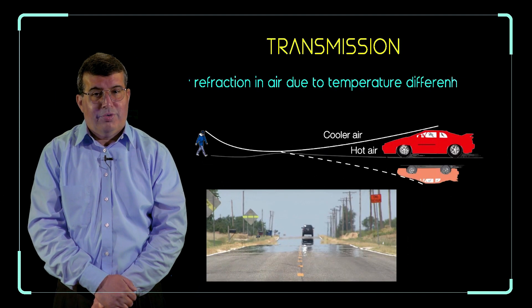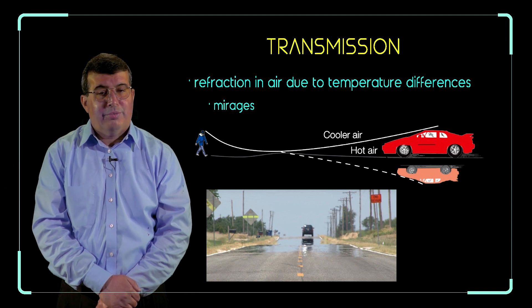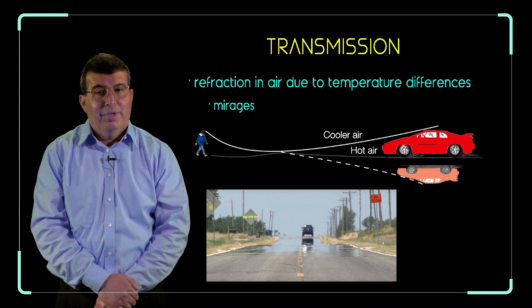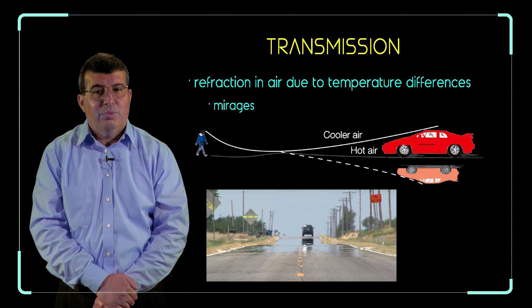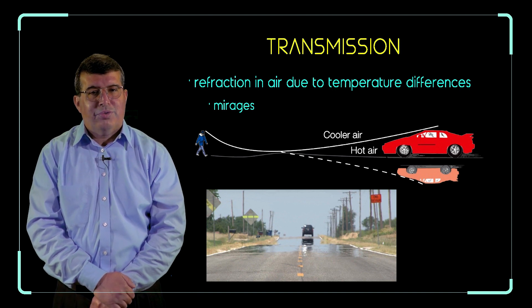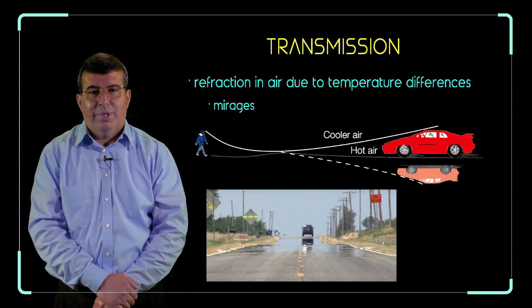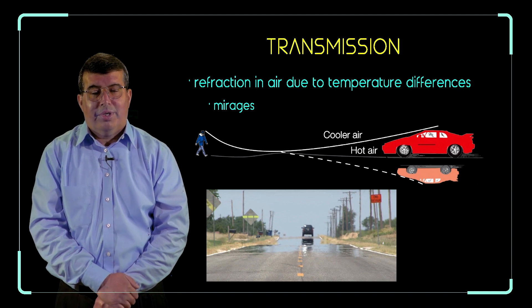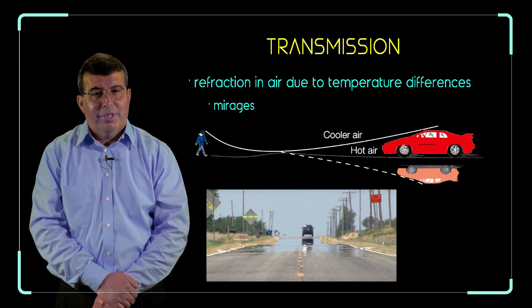An interesting effect of refraction we often see here in Louisiana are mirages on hot roads. Here we have a picture of a car and what appears to be a pool of water, with the car apparently reflected in it. There's no pool of water there — this is not reflection. This is actually a mirage due to refraction. Remember that light travels faster in hot air than in cool air. Let me draw a diagram.